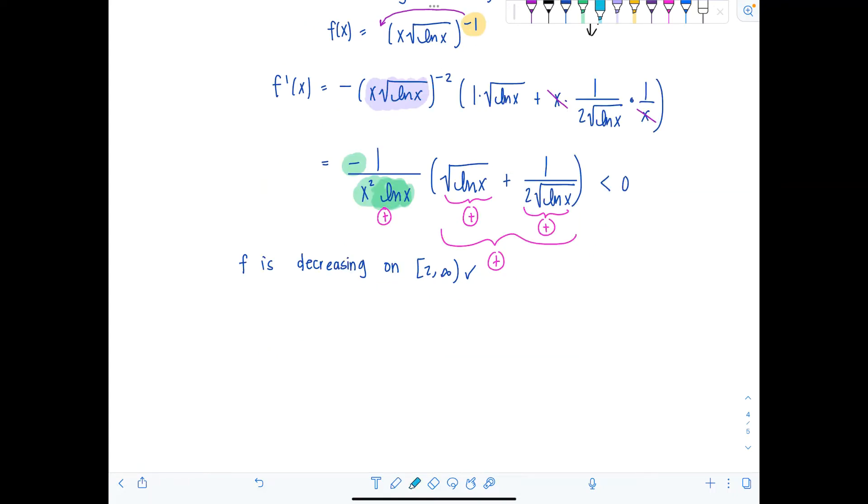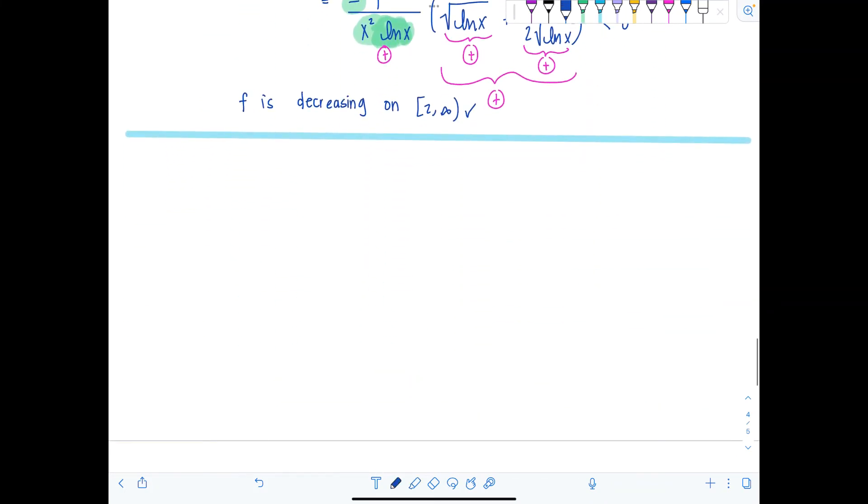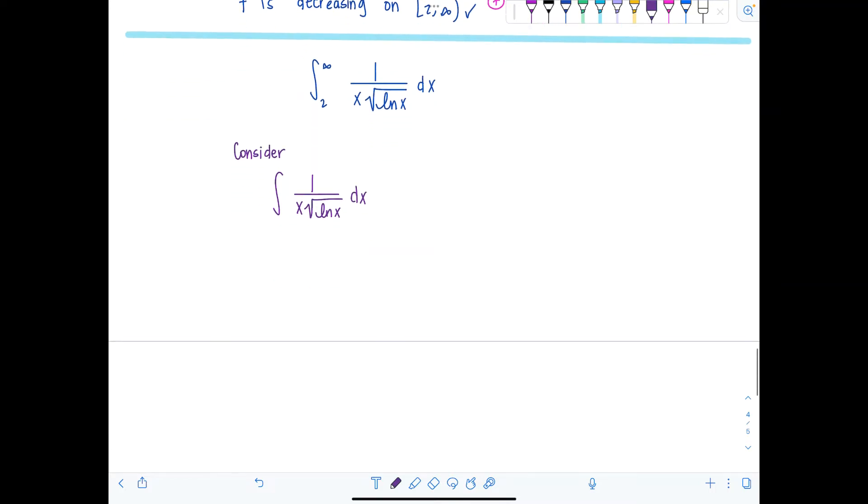All right. So remember our integral is going to match the limits on the integral will match the index of summation on the original series. So two to infinity. So what we're going to try to integrate now is integral from two to infinity, one over x square root ln of x dx. Now, like I mentioned, we're going to have to do a u substitution and it can get a little messy with this improper integral. So what I'm going to do first is just consider an indefinite integral one over x rad ln of x dx.